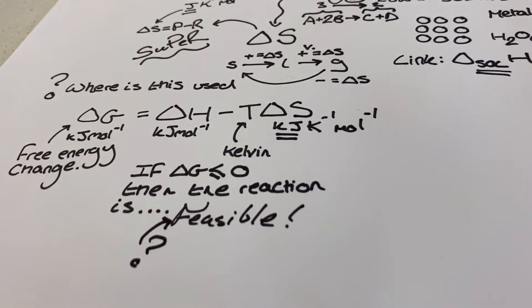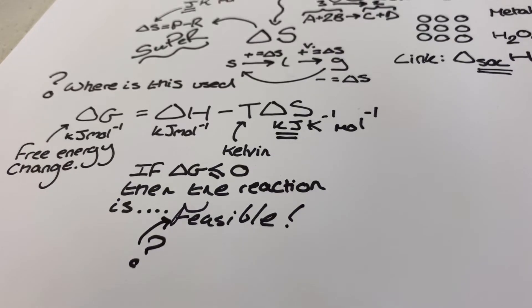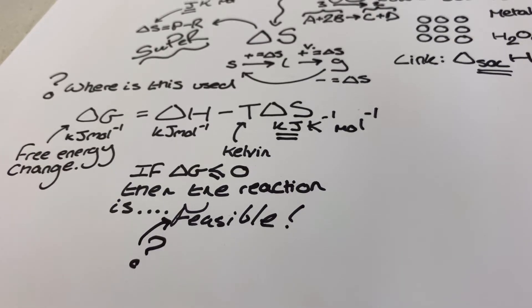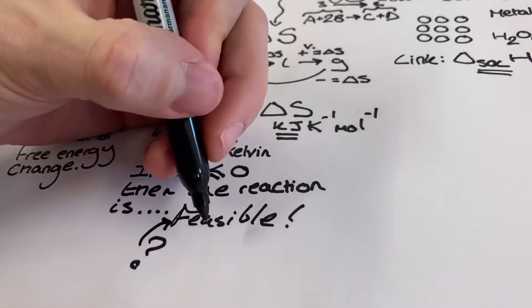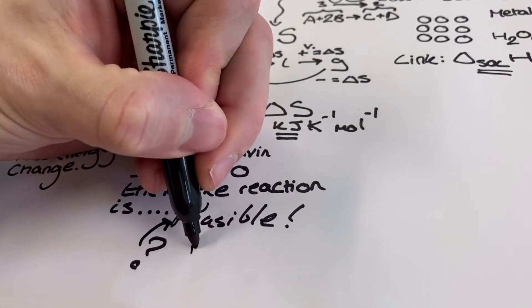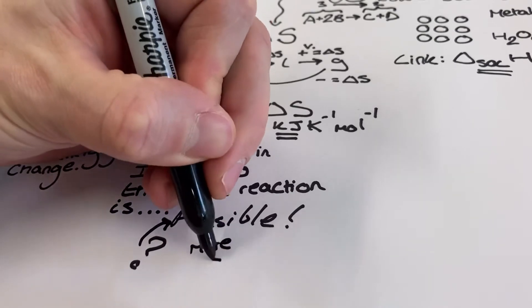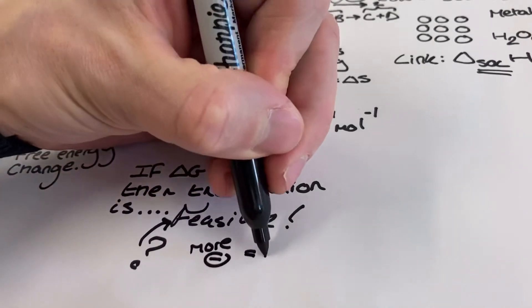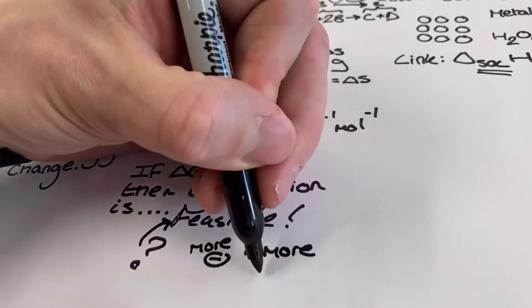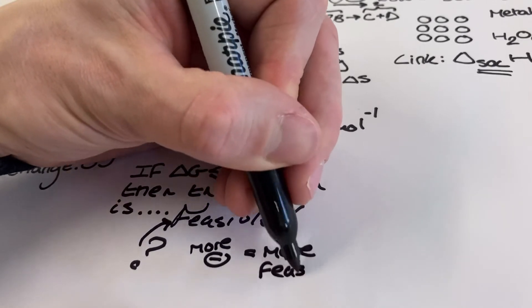We can also compare two different ΔG values together. Let's say if we adjusted the temperature, we could tweak our value of ΔG and make it more negative. If a value of ΔG becomes more negative, then our reaction is actually becoming more feasible at that new temperature. And likewise, the reverse is true. If you cause for a value to get closer to zero from a negative figure for our ΔG, then you're actually making the reaction less feasible by adjusting the temperature.